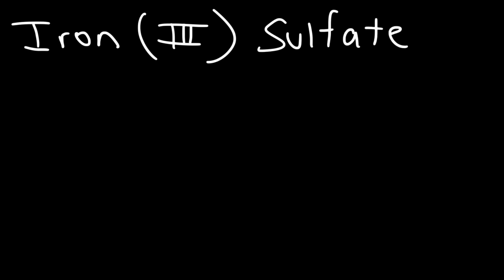Now the last case will be one with a transition metal. Let's say if we have iron(III) sulfate. How can we write the chemical formula for this compound? Now it's important to understand that the Roman numeral that you see here tells us the charge on the metal. So iron has a 3 plus charge, and sulfate is a polyatomic ion, which you need to know is SO4 2-.